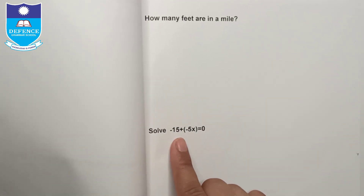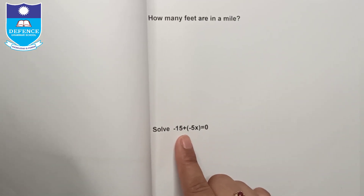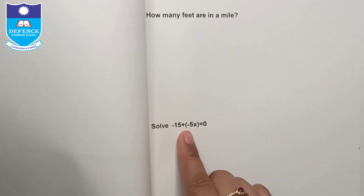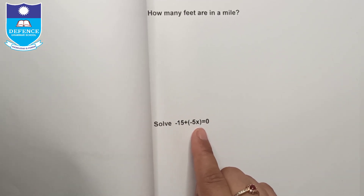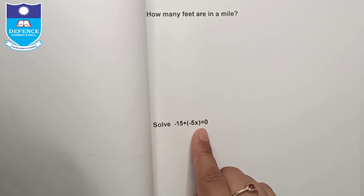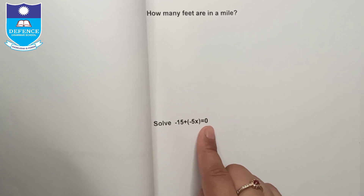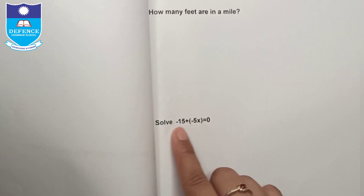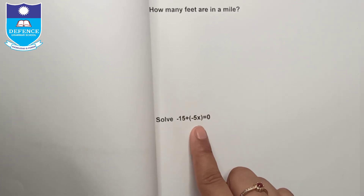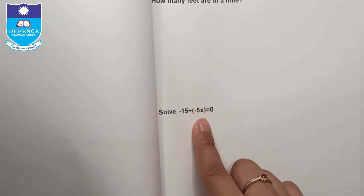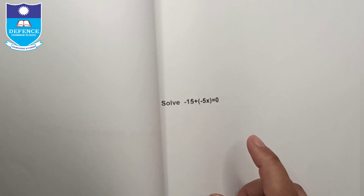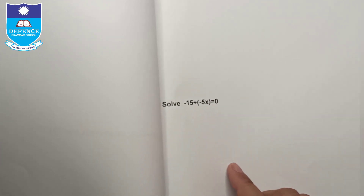Solve: -15 + (-5x) = 0। इस question को भी BODMAS rule की help से solve करें और answer write करें।